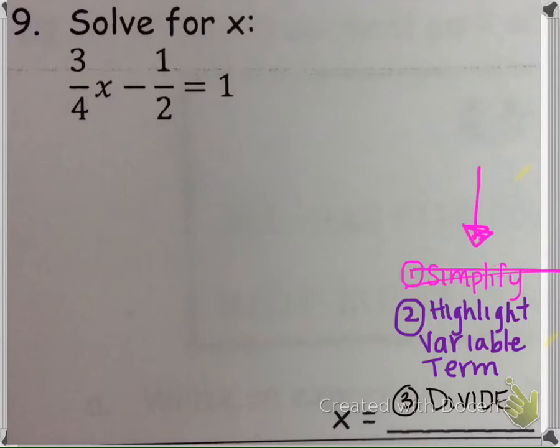So step one we would skip, then I would highlight where the variable term is, and it's not by itself, so we'd have to add 1/2 to both sides. And then we'd have to do 1 plus 1/2, which is 3/2.